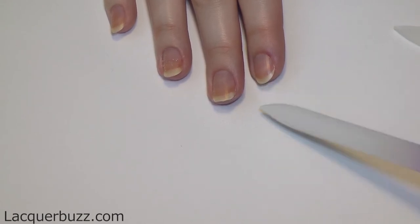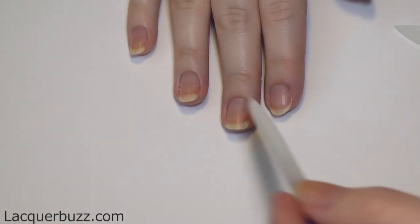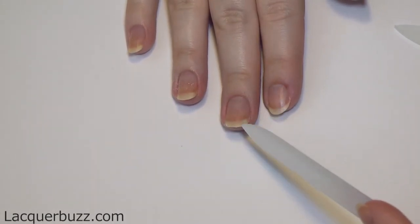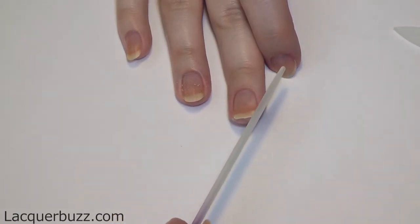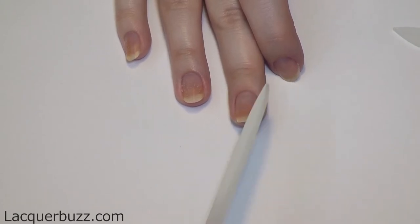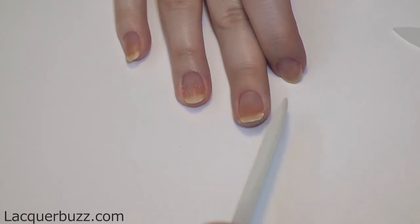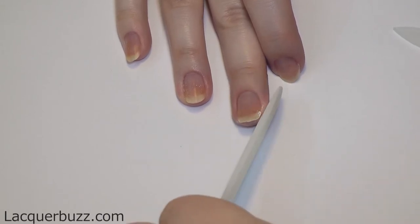I have to get rid of these corners and make the nail come diagonally towards the tip. So I'm gonna place the file at a 45 degree angle and take care of those corners.